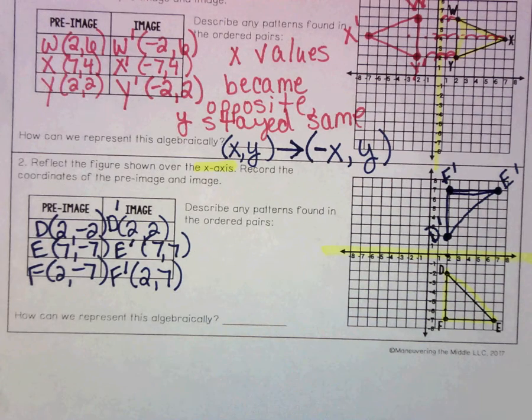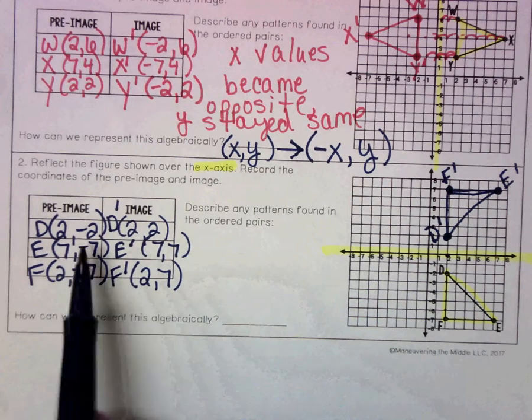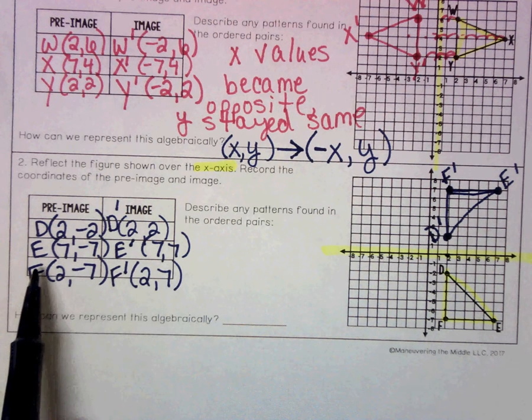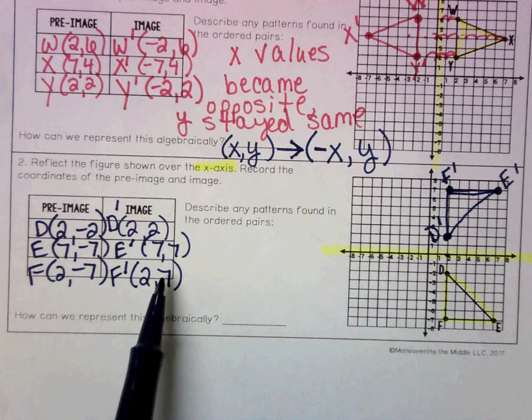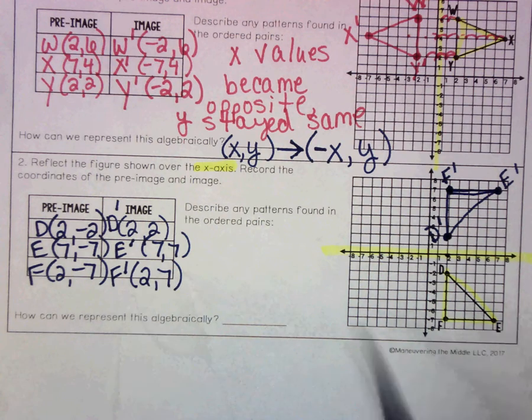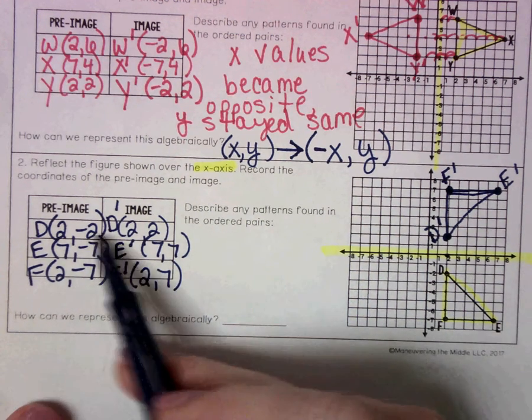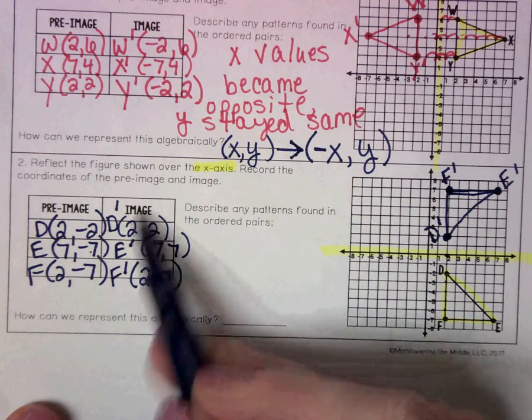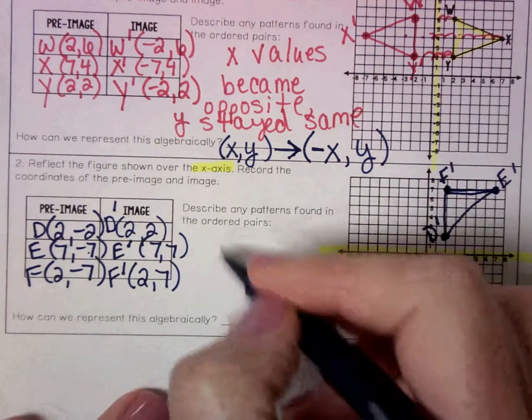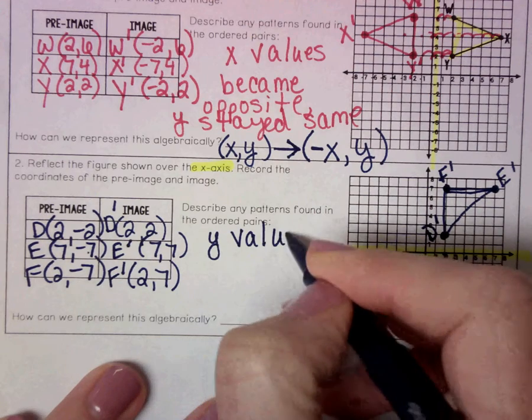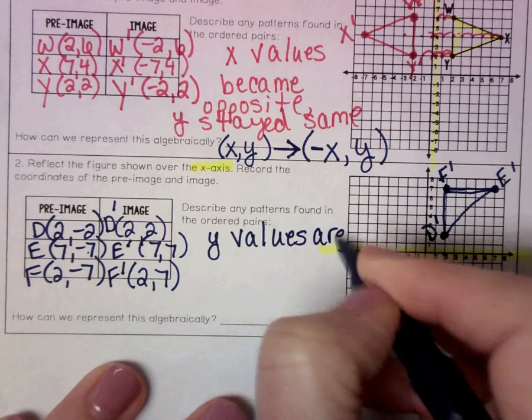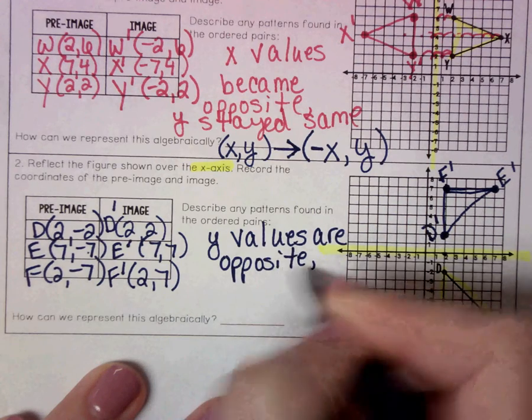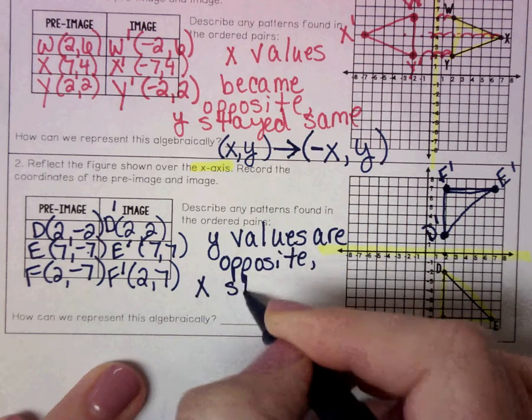So let's talk about what we notice here. What do you notice from our pre-image to our image? Hopefully you're noticing that our y values became the opposite, but our x's stayed the same. So this time our y values are opposite and our x's stayed the same.